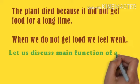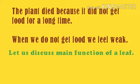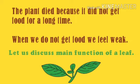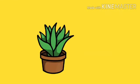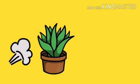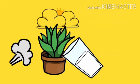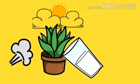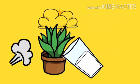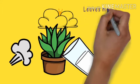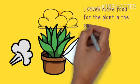Now let's discuss the main function of a leaf - what does a leaf do for a plant? As shown in the picture, leaves make food for the plant, and they take help from air, water, and sunlight. From air they use carbon dioxide.